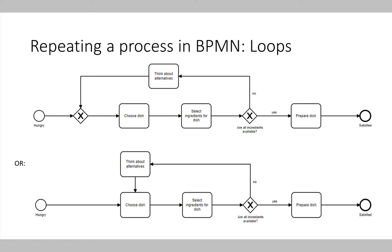This is a very common modeling approach, and therefore there's also a shortcut available. We don't need to explicitly model the XOR join gateway — we can omit it and model the loop as shown in the lower part of the slide. Here the XOR join gateway is omitted, and after the think-about-alternatives activity, we go directly using a sequence flow to the choose dish activity. This is also a valid BPMN model, and it makes it a little more explicit what happens.